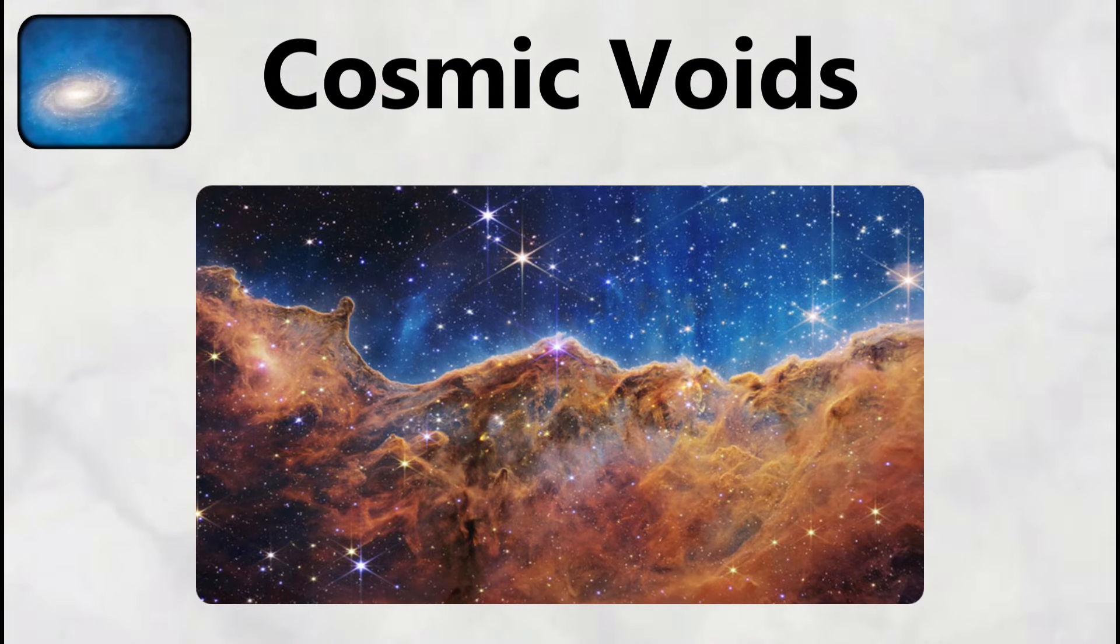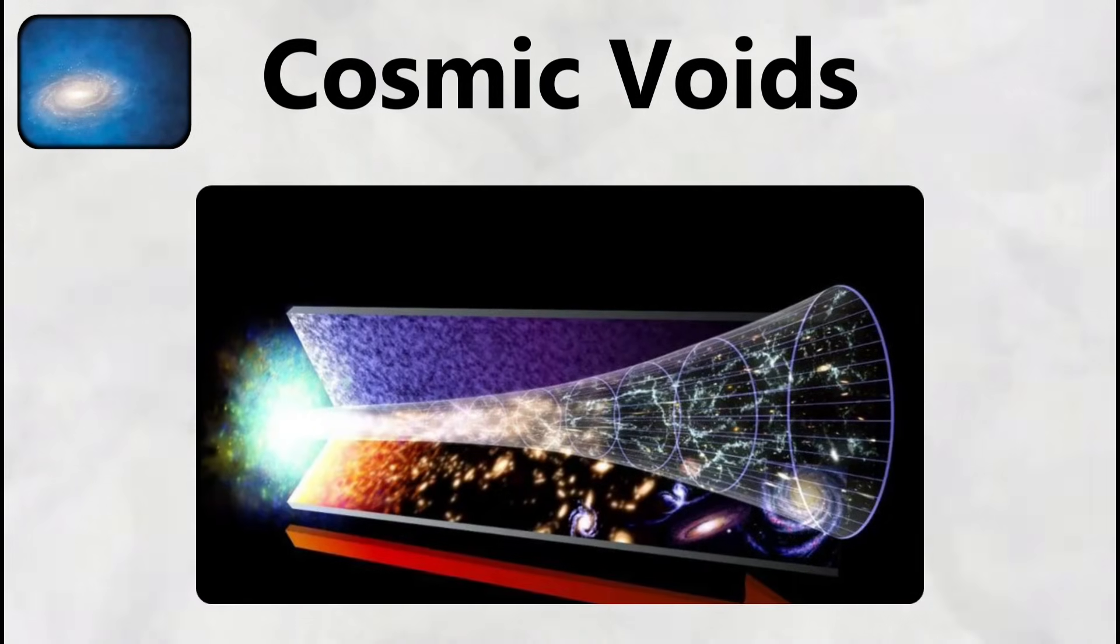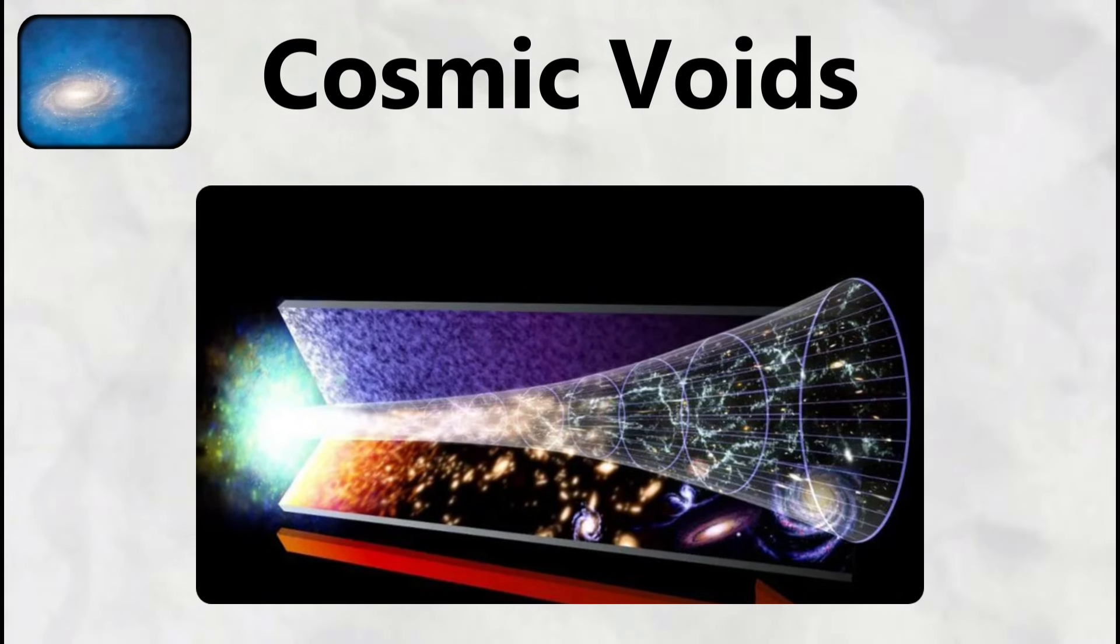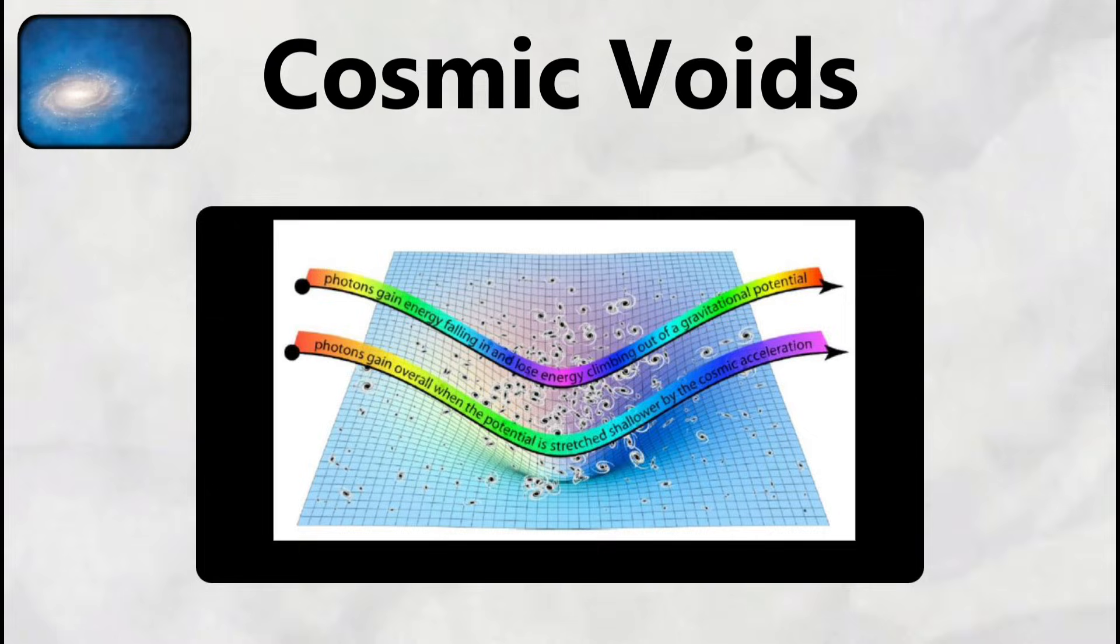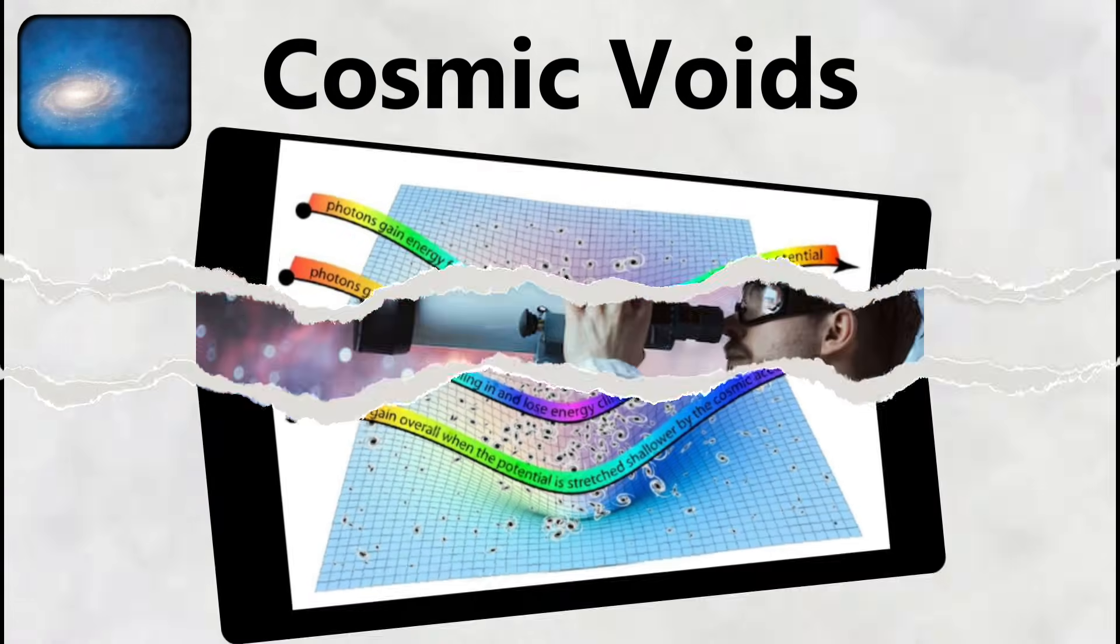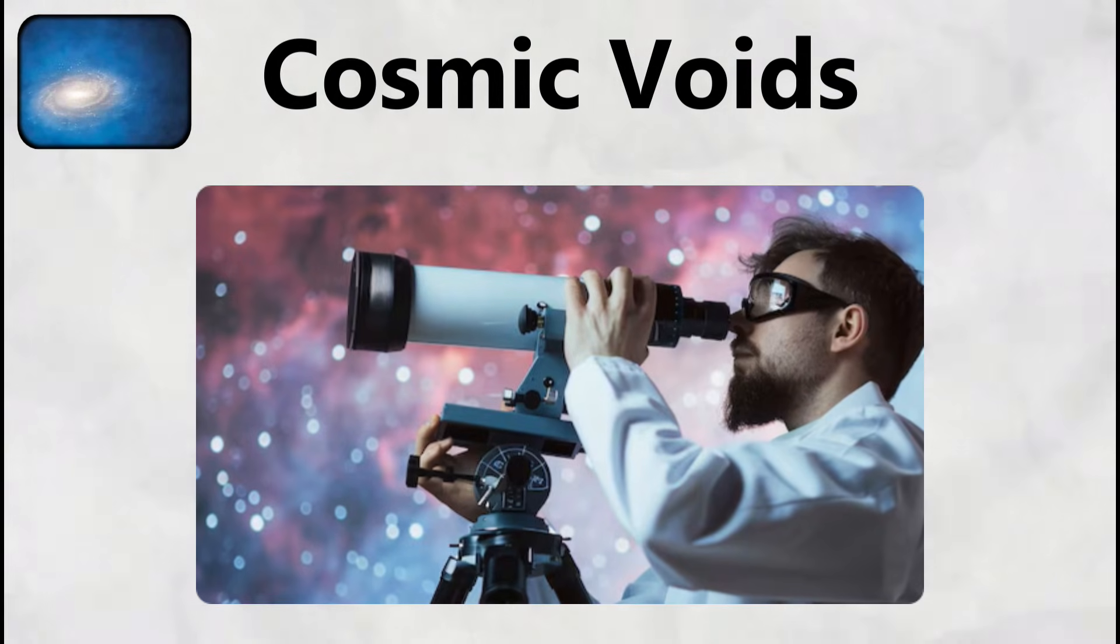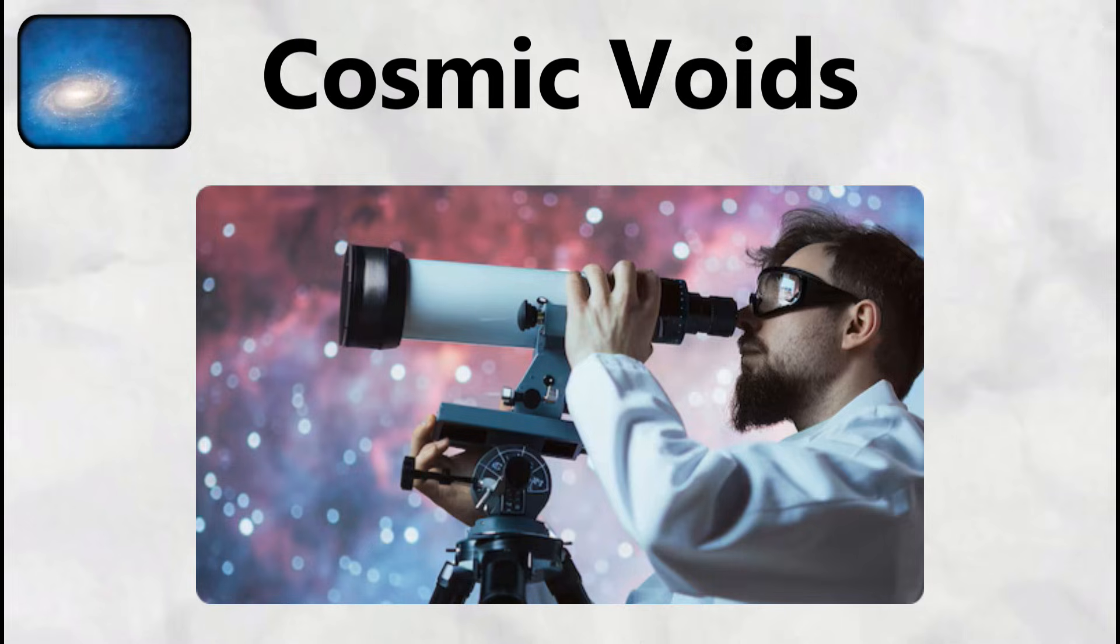What makes this void particularly unsettling is its connection to an unexplained cold spot in the cosmic microwave background, a region that appears significantly colder than the surrounding space. This cold spot suggests that photons from the Big Bang lost energy while traveling through the supervoid's gravitational field, a phenomenon called the Integrated Sachs-Wolfe effect. Some scientists speculate this void could be evidence of a collision with another universe, or represent physics beyond our current understanding of cosmology.